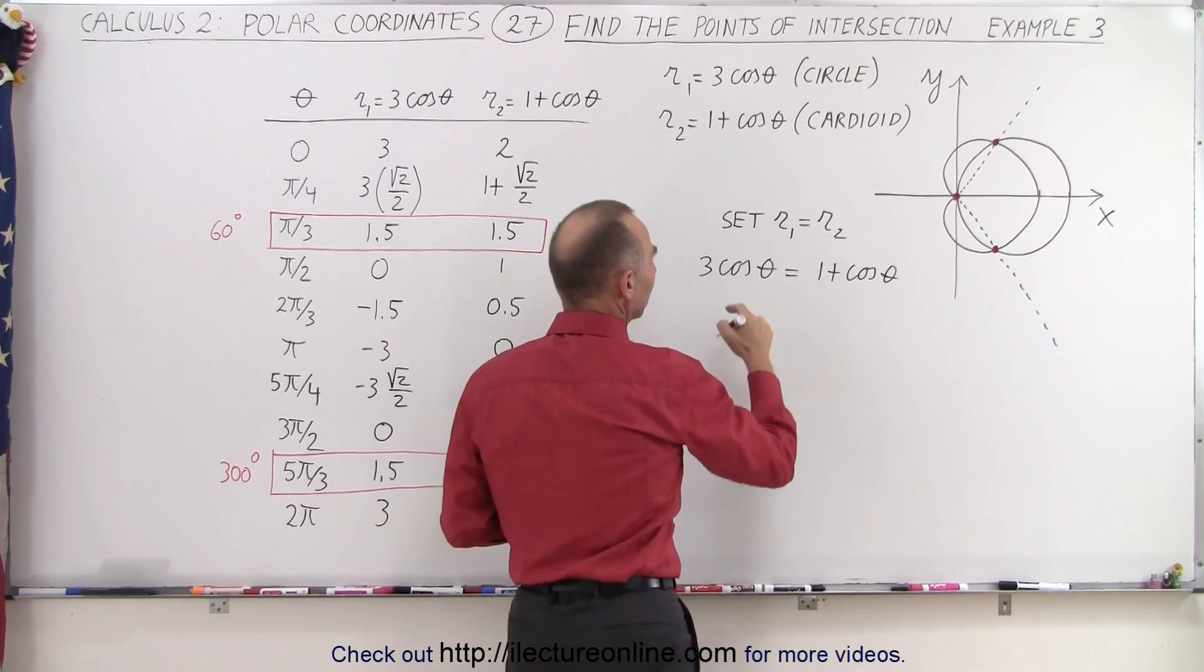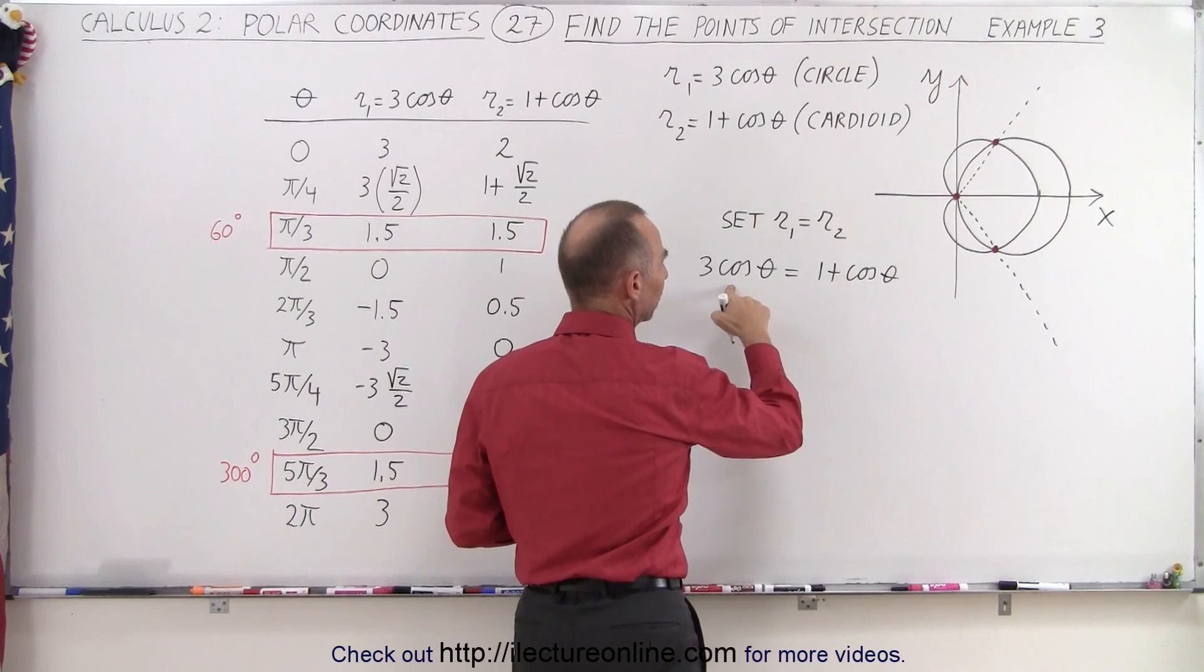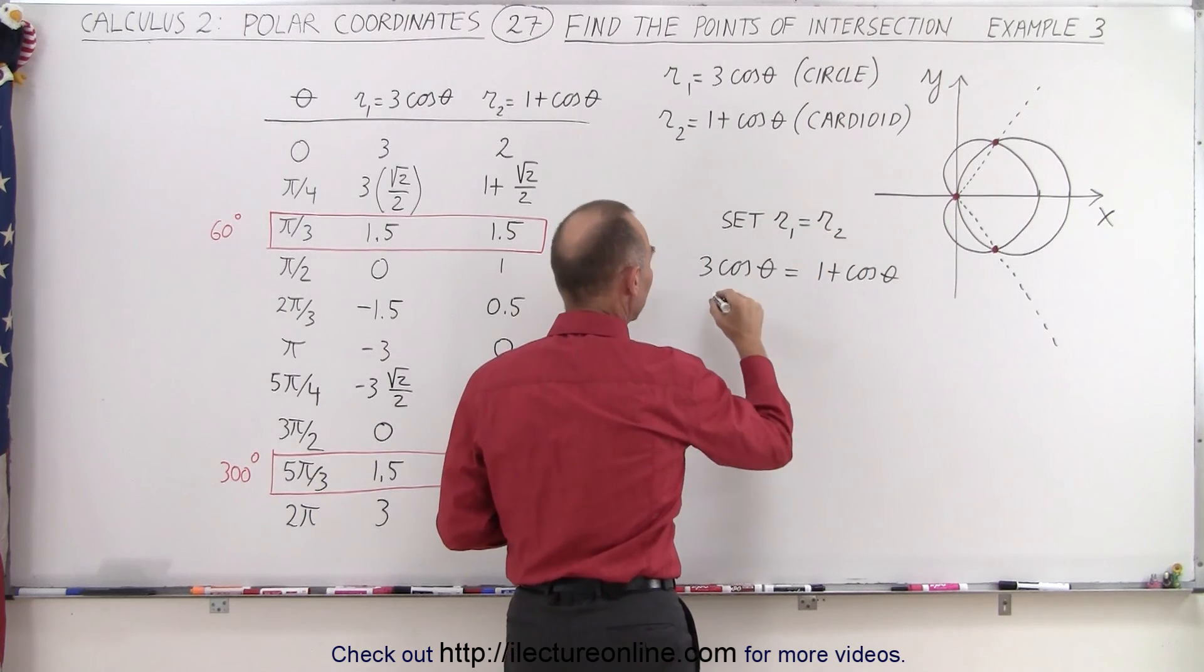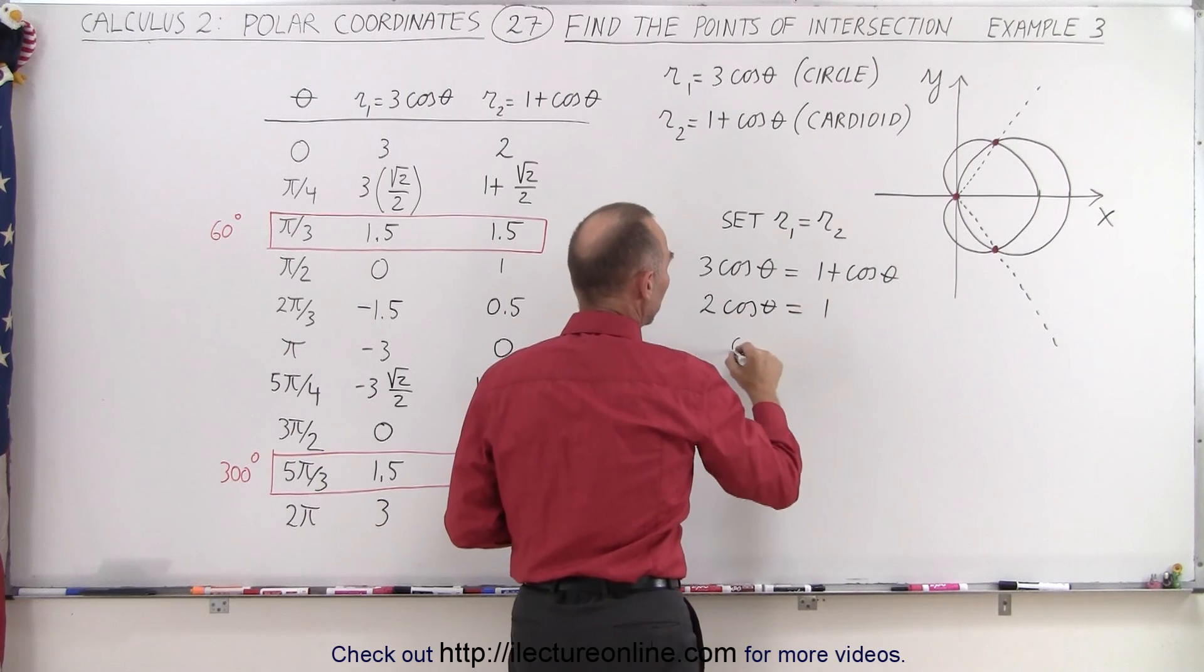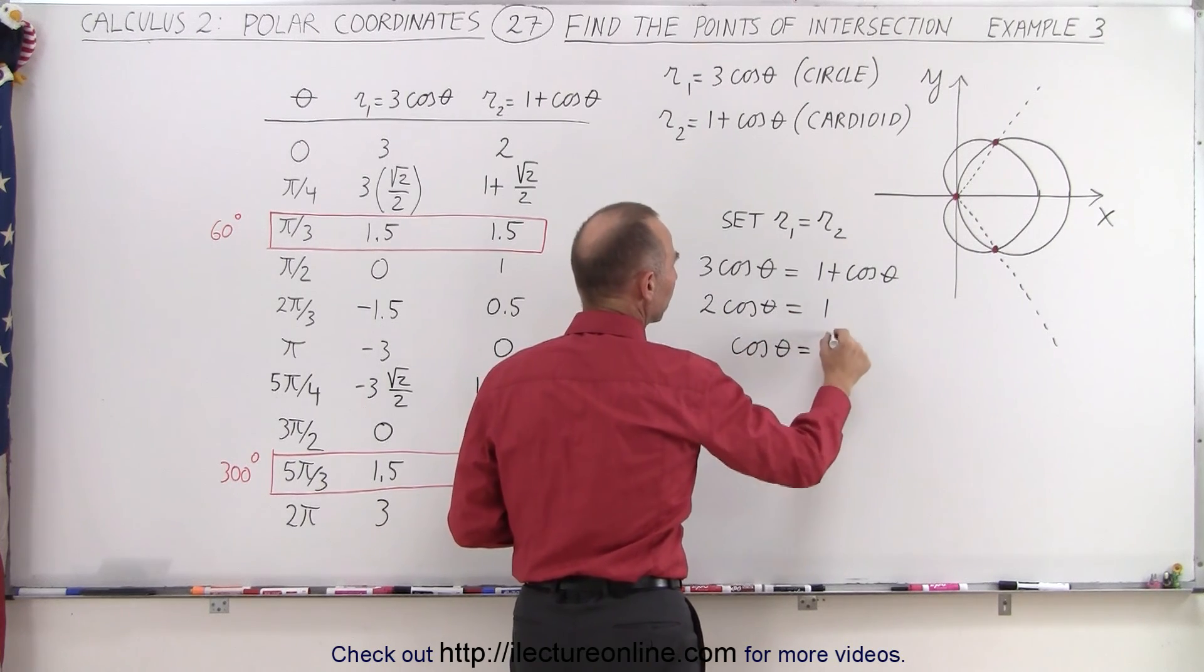So when we move this to the other side, now we have three times the cosine of theta minus one. We're going to bring the other side. That gives us two times the cosine of theta equals one, or the cosine of theta equals one half.